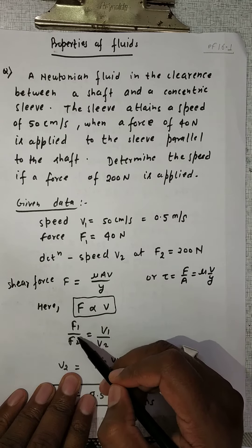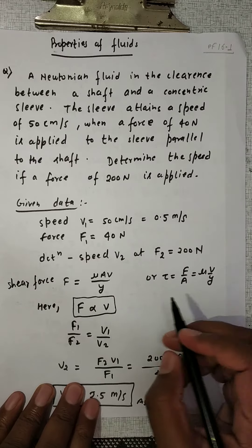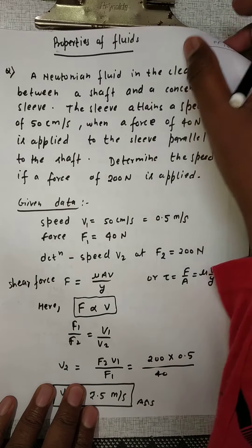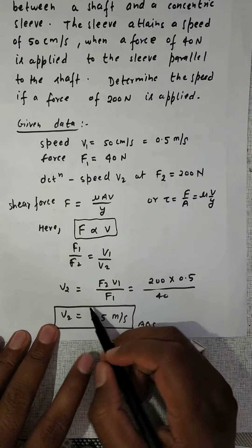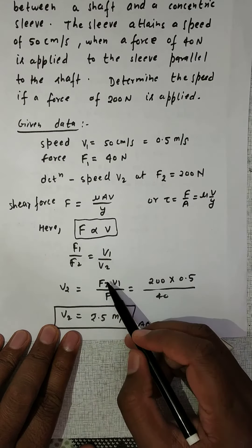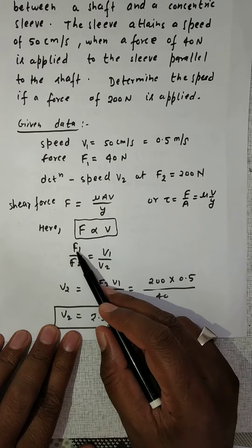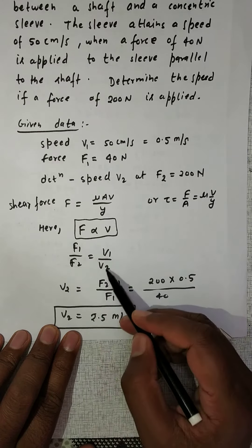So from here, F1/F2 equals V1/V2. We will put the value here. V2 equals F2V1/F1. This will go here, this will go here, and this point will come down.